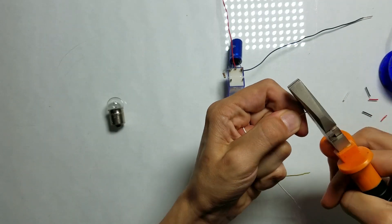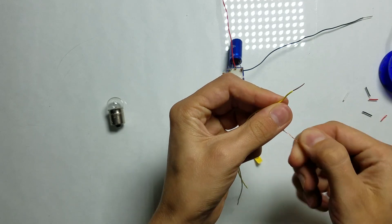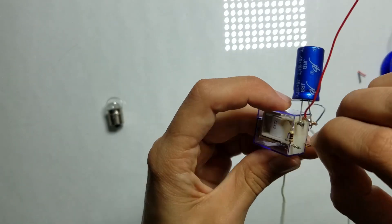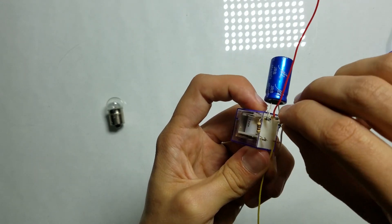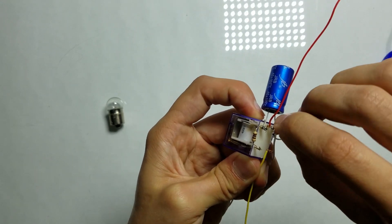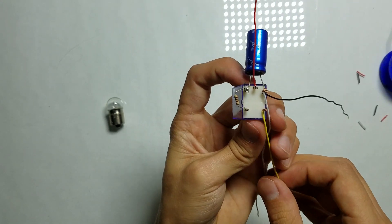Now let's strip white and yellow wires. I'll use these wires to connect a light bulb to this device. Now let's connect the yellow wire to the normally open contacts of the relay, and let's connect the white wire to the minus.